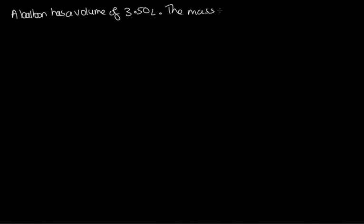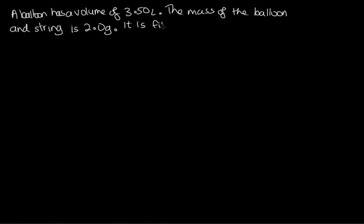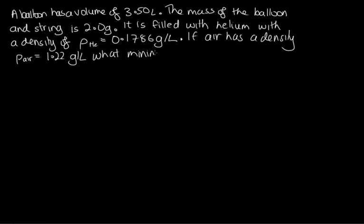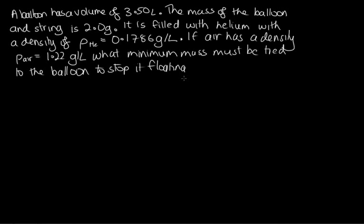Now let's do a calculation involving this helium balloon. The question is: a balloon has a volume of 3.50 litres. The mass of the balloon and string is 2.0 grams. It is filled with helium with a density of 0.1786 grams per litre. If air has a density of 1.22 grams per litre, what minimum mass must be tied to the balloon to stop it from floating away?